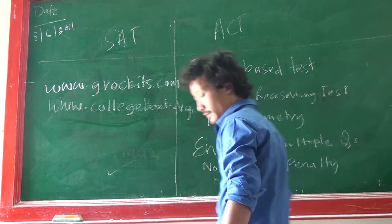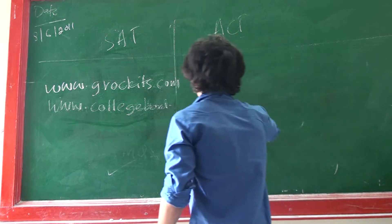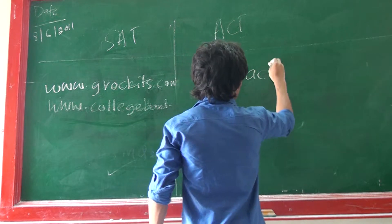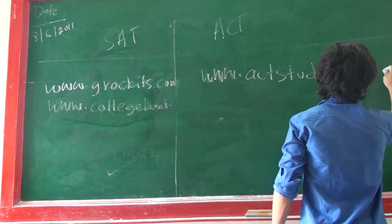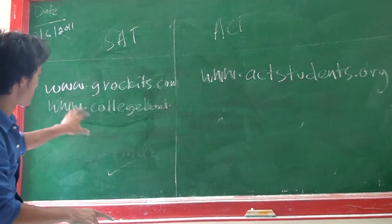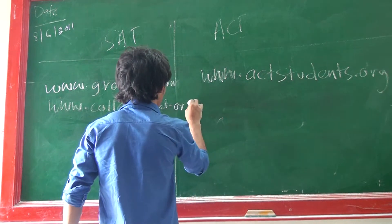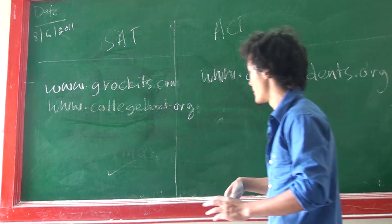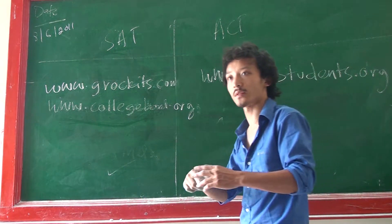For ACT, you have to use www.actstudents.org. For registration, you have to use www.collegeboard.org. For registration, you have to give your detailed personal information, and you will have to choose whether you want to give the SAT reasoning test or SAT subject test. Don't make a mistake while choosing this.